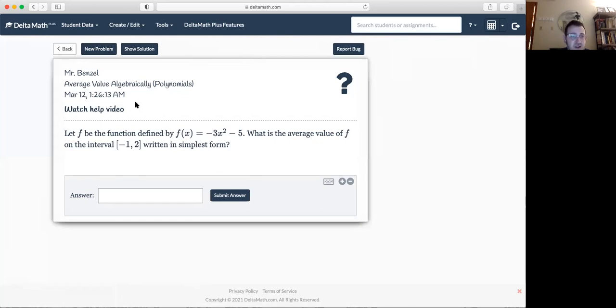So this is example 3. This says let f be the function defined by f of x equals negative 3x squared minus 5. So, of course, our average value formula is the same. So that's going to be 1 over B minus A of the integral A to B of f of x dx. And we're even just going to put in our B and our A. And then our integral is going to be from negative 1 to 2 of negative 3x squared minus 5 dx.